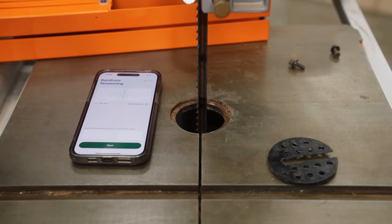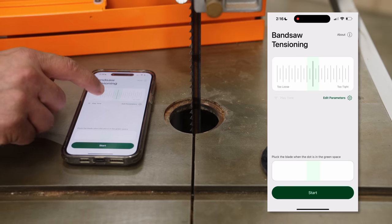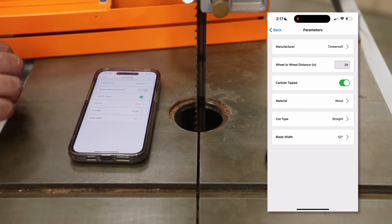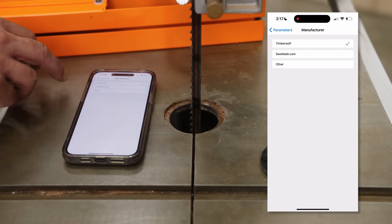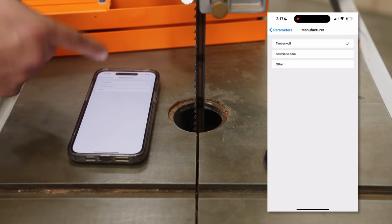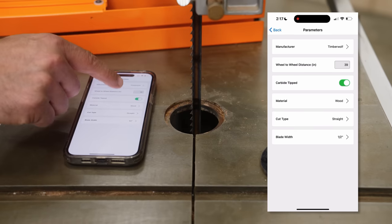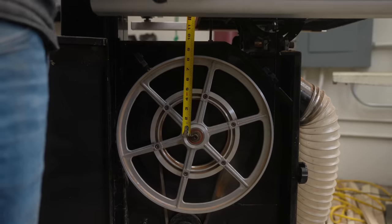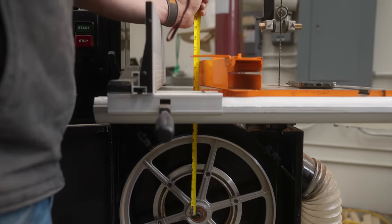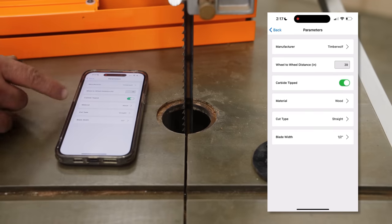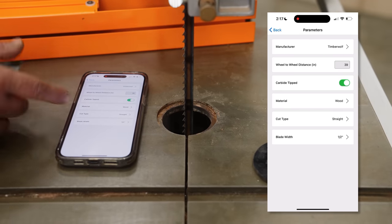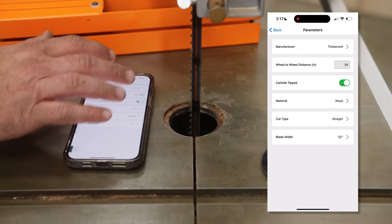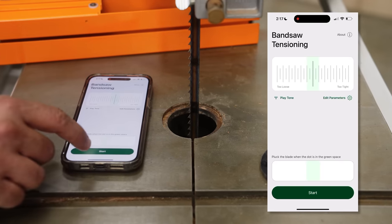So here's our bandsaw tensioning app. You can play the tone. Like I said, this sounds way better with headphones on. What you do is you set your parameters. We have a few different brands in here now, Timberwolf, SawBlade.com, and then other if those aren't your brands. You set your wheel to wheel distance. Now that's the center of the wheel to the center of the wheel, not top to bottom. I have a 17 inch bandsaw, 39 inches between the wheels. Is your blade carbide tip? What are you cutting? Do you want to do a straight or a curve cut? And then what is the width of your blade? You're going to go back and start your test.